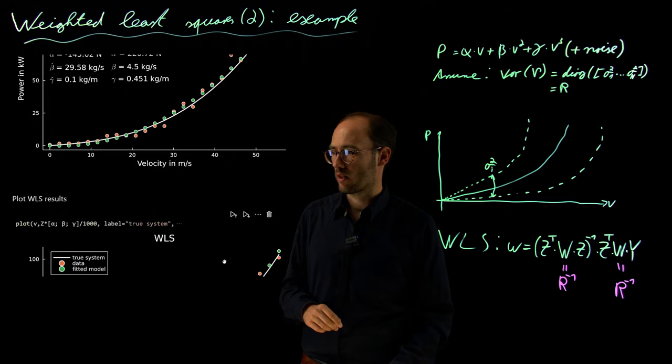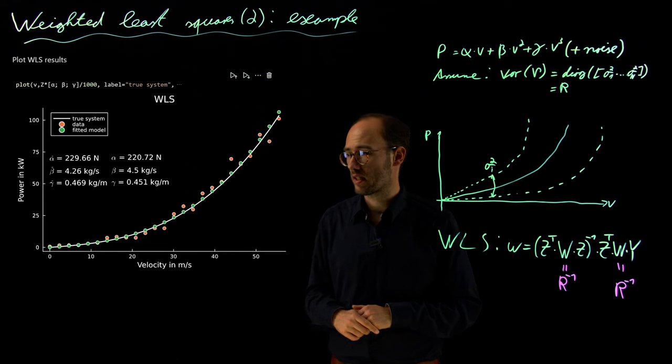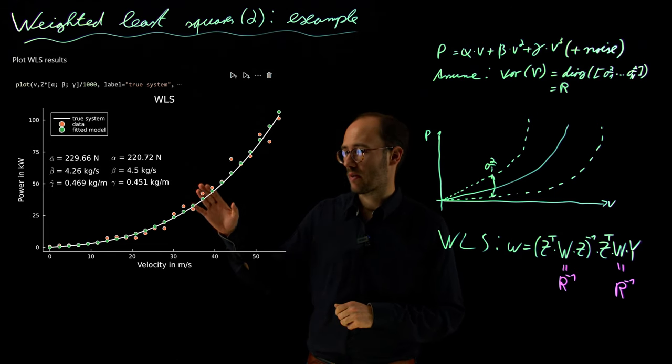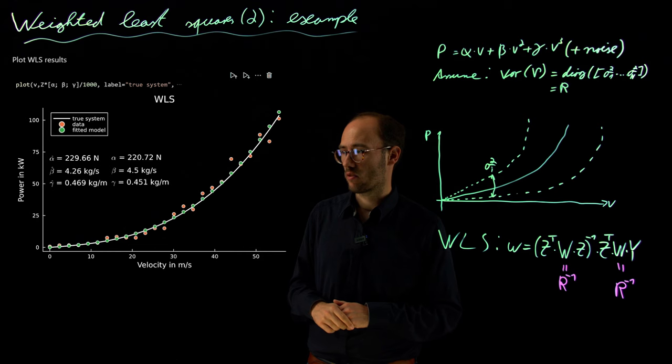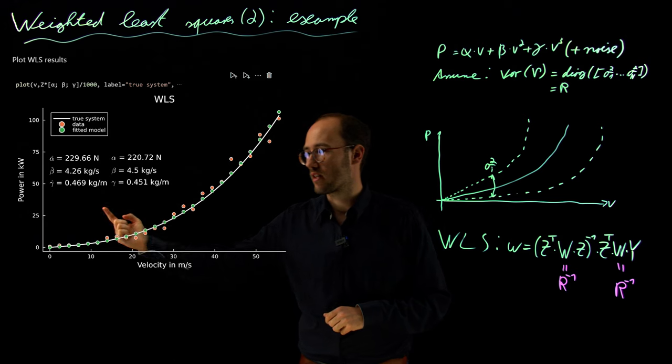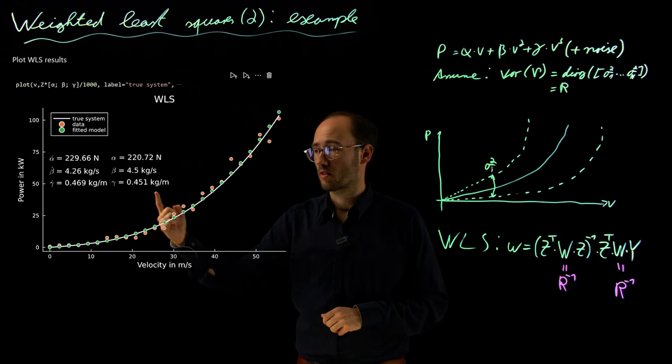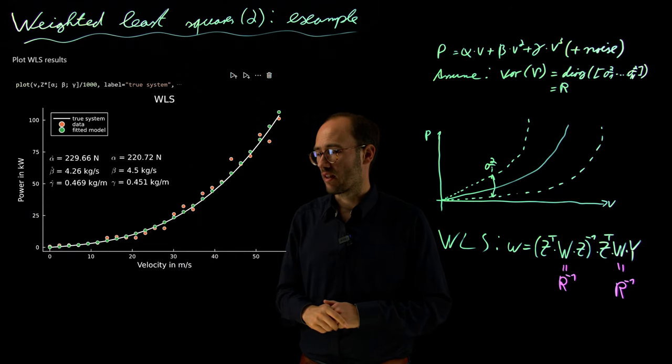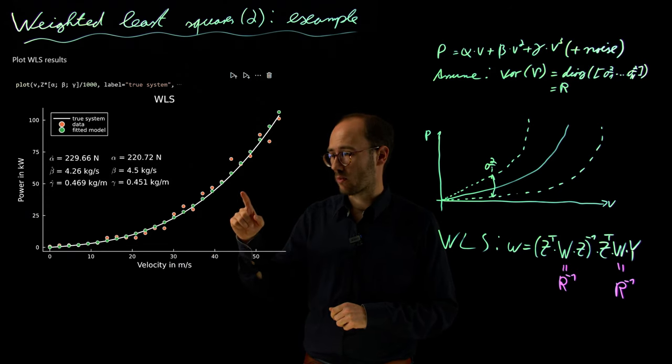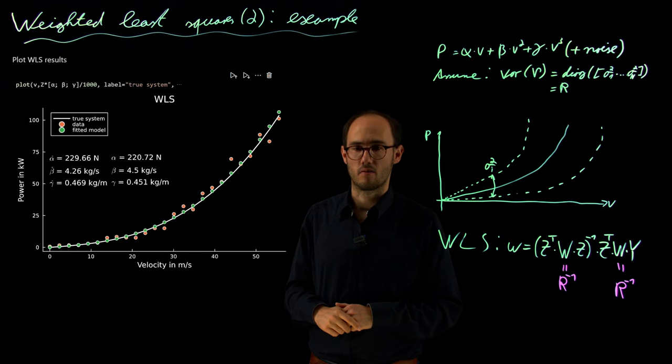However, we can of course utilize now our weighted least squares solution and compare it against the ordinary least squares solution. And what we can see here is that due to the weighting, we have been able to obtain a parameter set, the estimated parameter set, which is quite close, not exact, but quite close to the true parameters. And also accordingly, the prediction of the model, which we have here in the greenish points, is significantly or at least visibly better than the ordinary least squares fit.